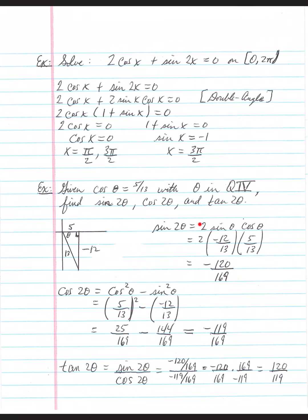For sine(2θ), the double angle formula is 2·sine(θ)·cosine(θ). Sine(θ) = −12/13 (opposite over hypotenuse) and cosine(θ) = 5/13. Multiplying: 2 × (−12/13) × (5/13) = −120/169.